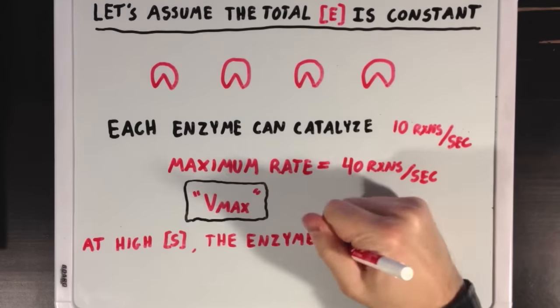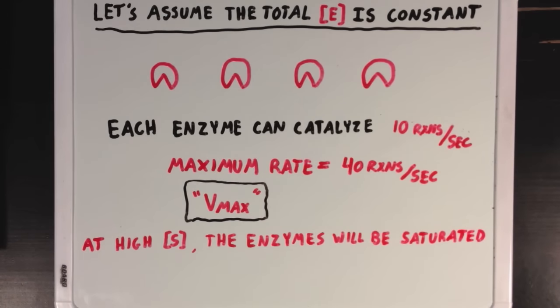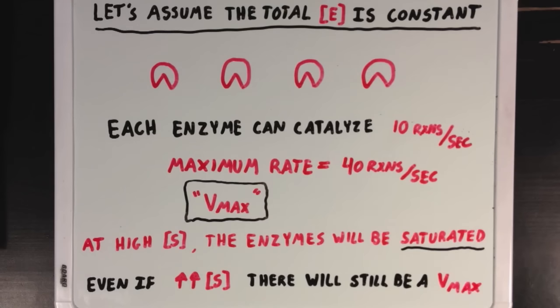And the idea here is that at really high concentrations of substrate, the enzymes will be saturated and full up with substrate, and won't be able to react any more quickly. And even if we were to really increase the concentrations of substrate a lot, there will still be a Vmax. There's only so much that we can increase the rate of a reaction by increasing the substrate concentration.